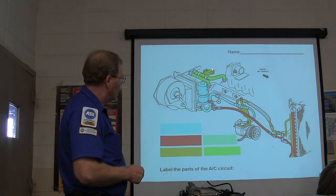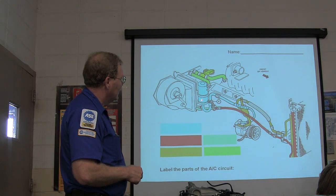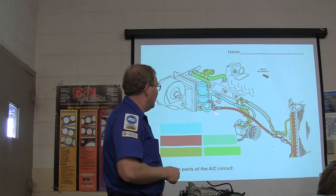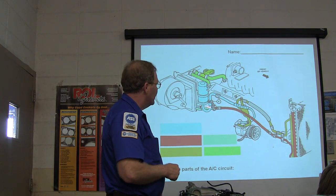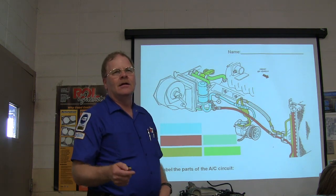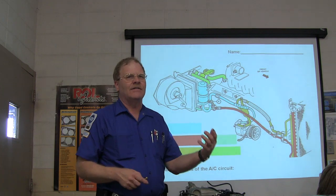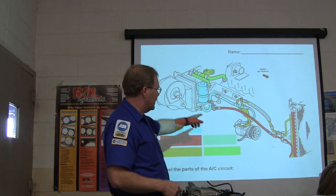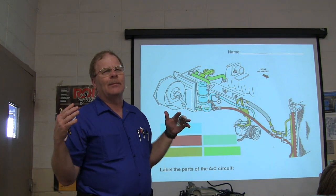That canister is actually the accumulator. Now, the ones with a thermal expansion valve are going to have a device called a receiver dryer on the liquid line. Remember: if it's got a receiver dryer on the liquid line, it's going to have an expansion valve, not a fixed orifice. We're going to talk more about this in a minute.